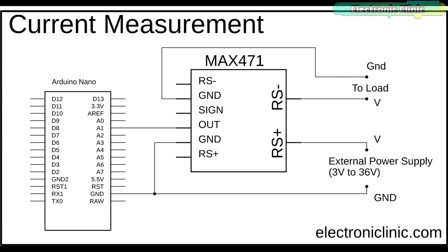As you can see the circuit diagram is very simple. The positive voltage wire of the power supply is connected with the RS-plus terminal while the ground pins of the max 471 and Arduino board.